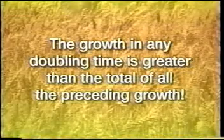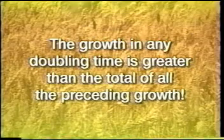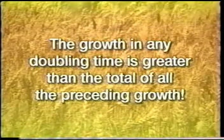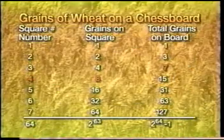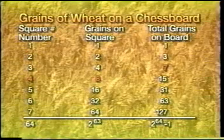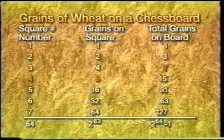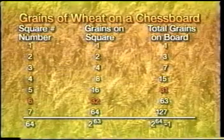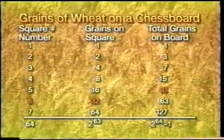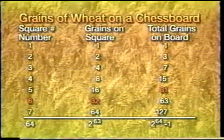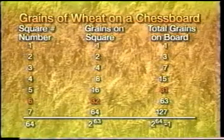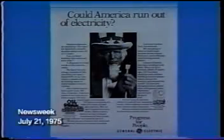There's something very important to note: the growth in any doubling time is greater than the total of all preceding growth. When we put eight grains on the fourth square, the eight is larger than the total of seven already on the board. When we put 32 grains on the sixth square, 32 is larger than the total of 31 already on the board. Every time the growing quantity doubles, it takes more than all that was used before.